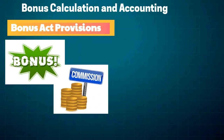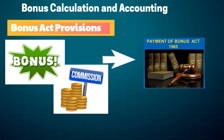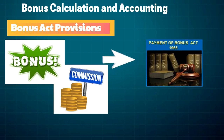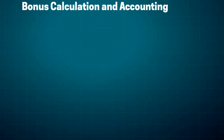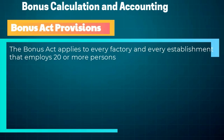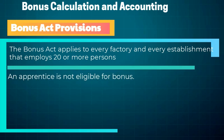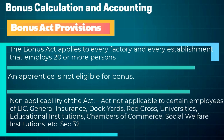However, in India it's more or less compulsory to give bonus due to bonus act provisions. In 1960 the Government of India appointed a Bonus Commission. On recommendations of the Bonus Commission, the Payment of Bonus Act 1965 was formed. The Bonus Act applies to every factory and every establishment that employs 20 or more persons. An apprentice is not eligible for bonus.